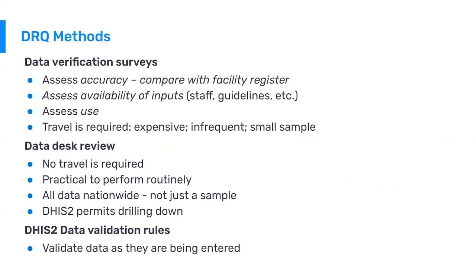The first method for doing data quality reviews is a data quality verification survey. Surveys go out and look at different sites — health facilities, community health workers, different districts — assessing the accuracy of the data compared with the facility registry or the actual hard copy that the facility has. They're physically checking whether the data in DHIS2 matches what's been physically recorded on paper records. They're also assessing the availability of inputs such as guidelines, staff knowledge on data quality, and standard operating procedures.